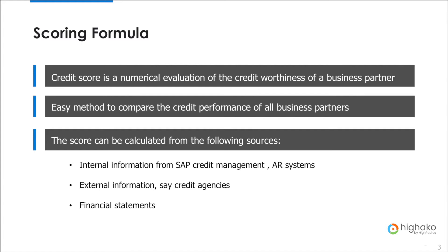You can also use external agency information. For example, you can go to the DNB website or CRMZ. What these external agencies do is collect information from various sellers, collate it together, and then give you a final report on how good or bad the customer is doing business with various other industries. If there is a new customer that wants to do business with you, you can quickly go to these external agencies and get a feel of how good this customer is doing business with others.